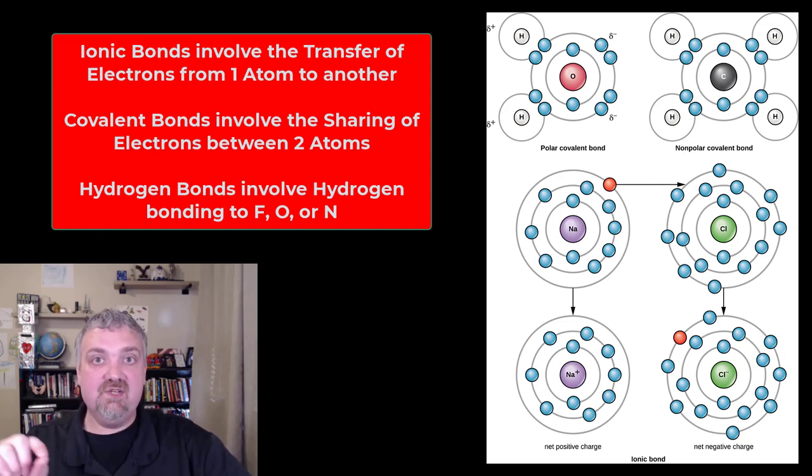Covalent bonds, keyword is shared, just like I showed you with that molecule of water. When atoms share electrons to become happy, those are called covalent bonds. And then hydrogen bonds are going to be a special type of bond we're going to talk about later, a dipole-dipole interaction where you have hydrogen from one water molecule or anything really. The typical example we talk about is water.